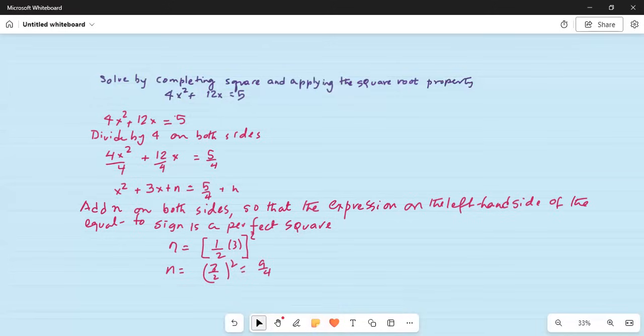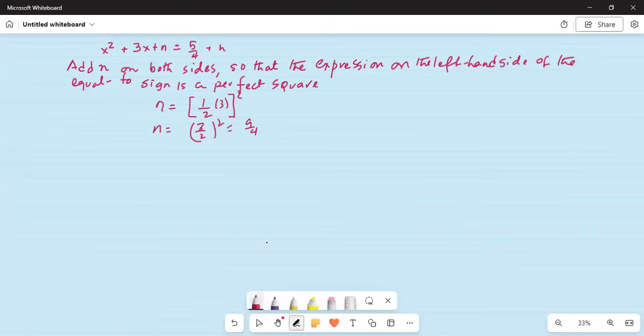Let me create some space. Now we added n on both sides and the goal is to make the left hand side a perfect square. So x square plus, and now 3x can be written as, there is nothing in front of 3x, assume it's 1. So 2 divided by 2 multiplied by 3, for n I write as 9 by 4 is equal to 5 by 4 on the right hand side plus n which is 9 over 4.